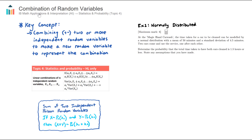In this video we look at the concept of combination of random variables, which is part of the AIHL only course in Topic 4 Statistics and Probability. This concept is all about combining — adding and subtracting — two or more independent random variables to make a new random variable that represents the combination. In this video I'm going to go through two examples, both from the RV question bank: the first involves random variables that follow a normal distribution, and the second involves random variables that follow a Poisson distribution.